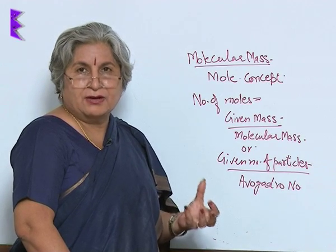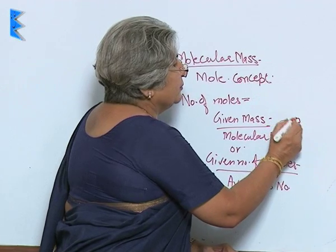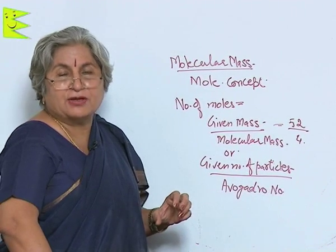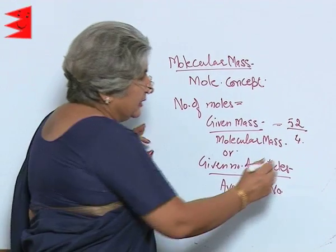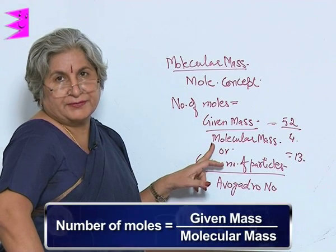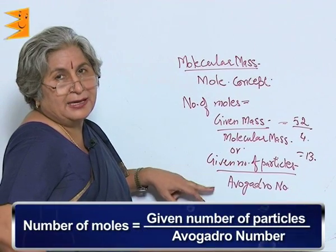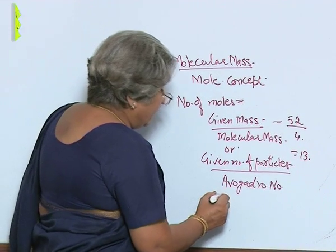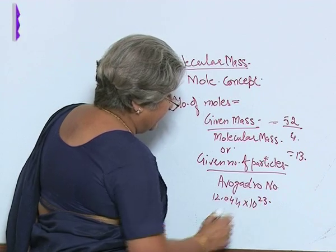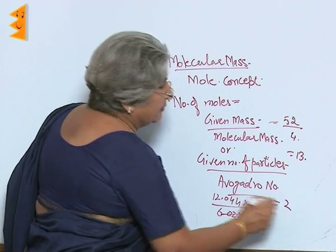If we are given a certain mass of an element, say 52 grams of helium, it contains 13 moles. The number of moles can be calculated by dividing the given mass by the molecular mass. Another way is to divide the given number of particles by Avogadro's number. For example, if the given number is 12.044 × 10²³ and Avogadro's number is 6.022 × 10²³, then the number of moles will be 2.